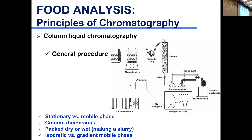The example with constant mobile phase is isocratic — when the mobile phase from beginning to end has the same concentration, that's isocratic. The example where we changed the mobile phase is gradient elution.